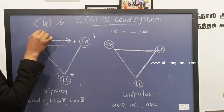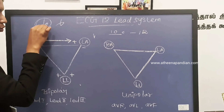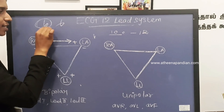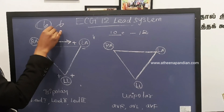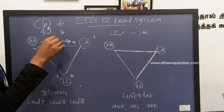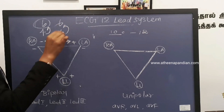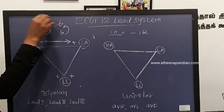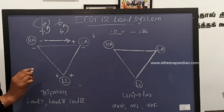In the limb electrodes, we are using 4 electrodes to take 6 waveforms, and then we are using 6 chest electrodes to take another 6 ECG waveforms. So this is the calculation.